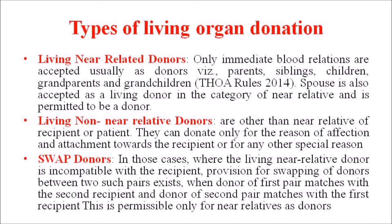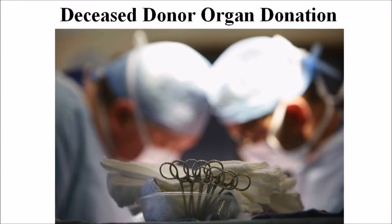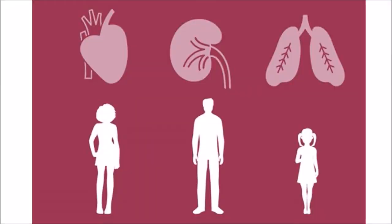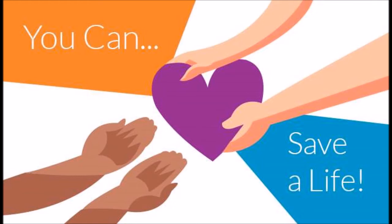So these are the three different types of living donor organ donation. When it comes to the second category, that is deceased donor organ donation, a person can donate multiple organs and tissues after his death or brain death. His organs continue to live in another person's body. Consent of a near relative or a person in lawful possession of the dead body is required. If the deceased donor is under the age of 18, then consent is required from one of the parents or any authorized relative. Medical suitability for donation is determined at the time of death.